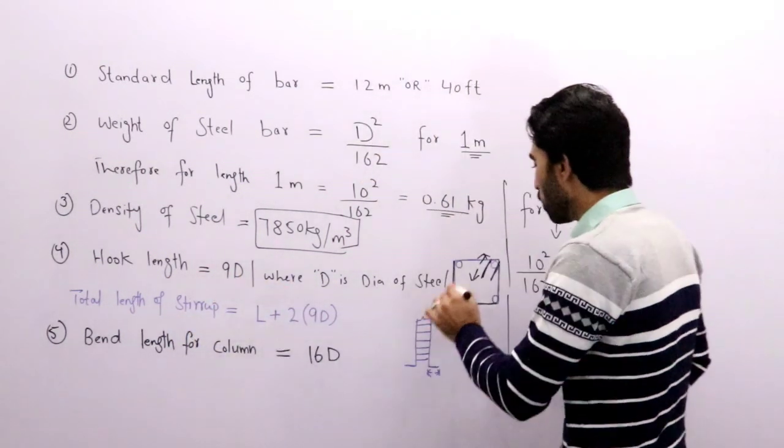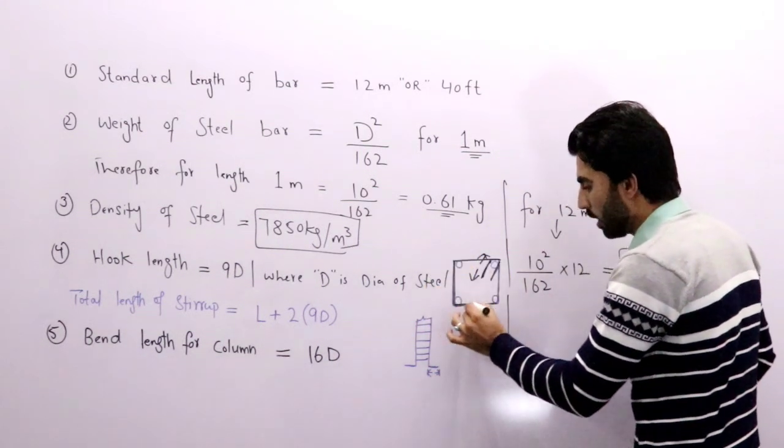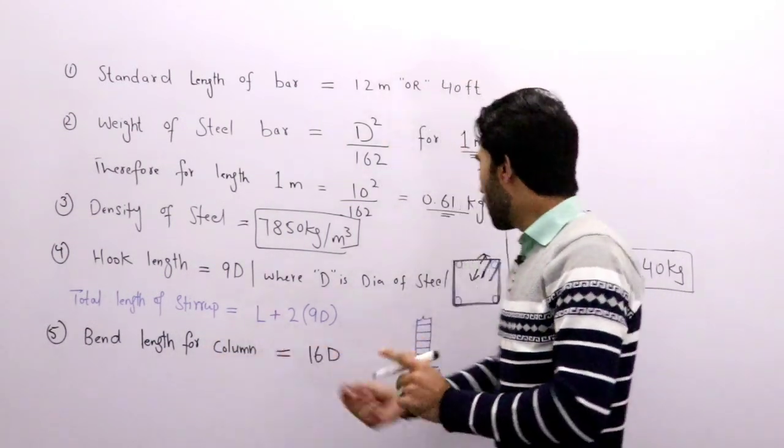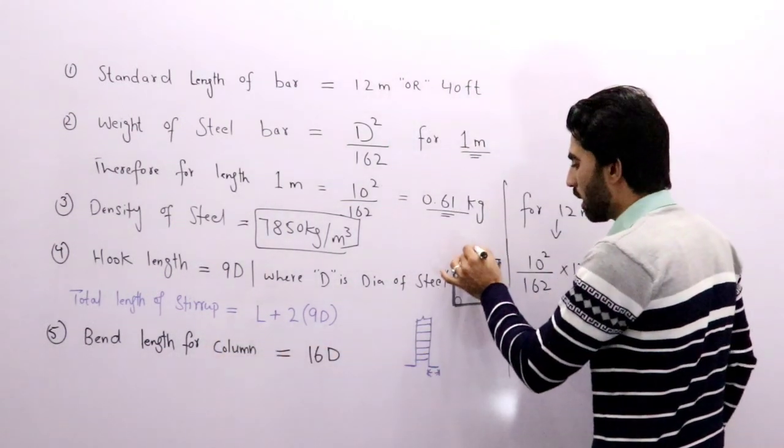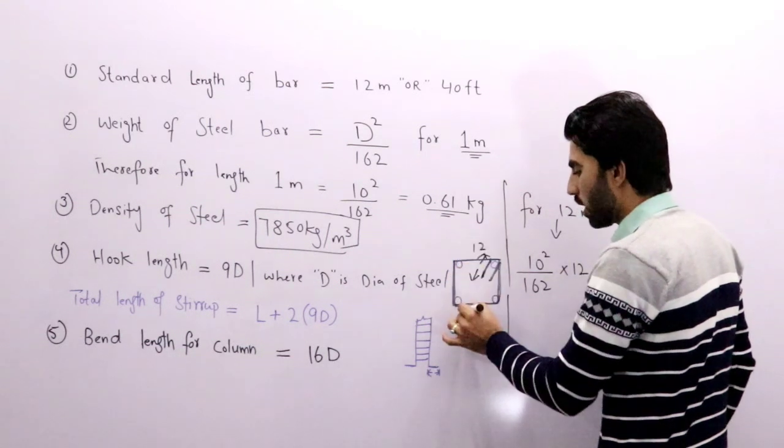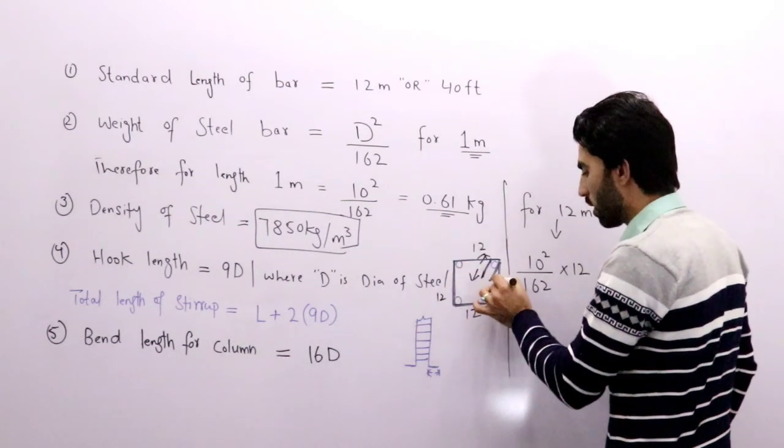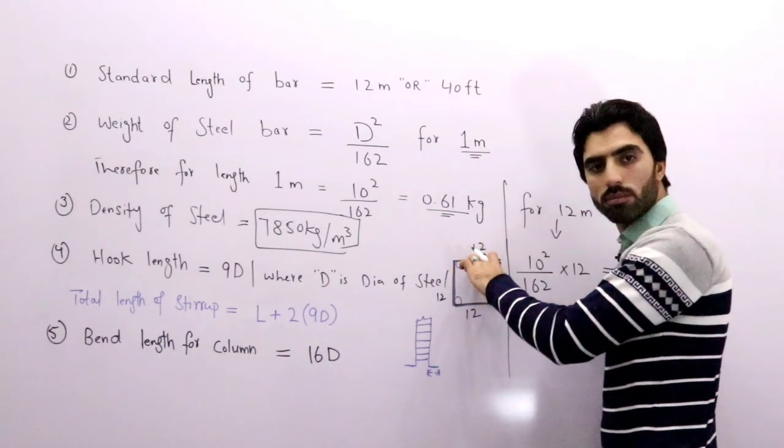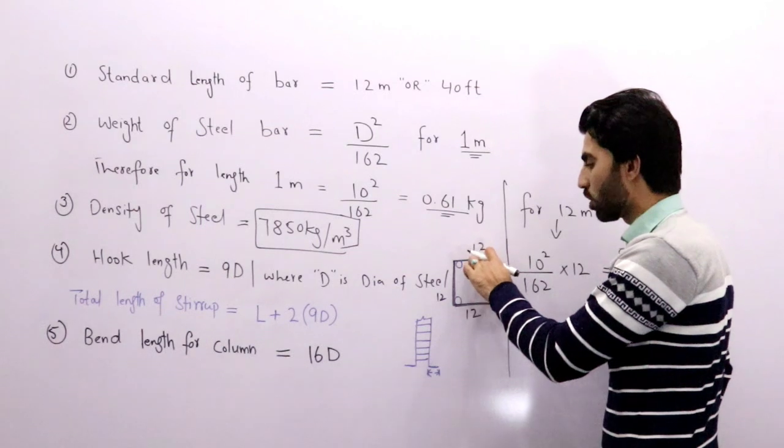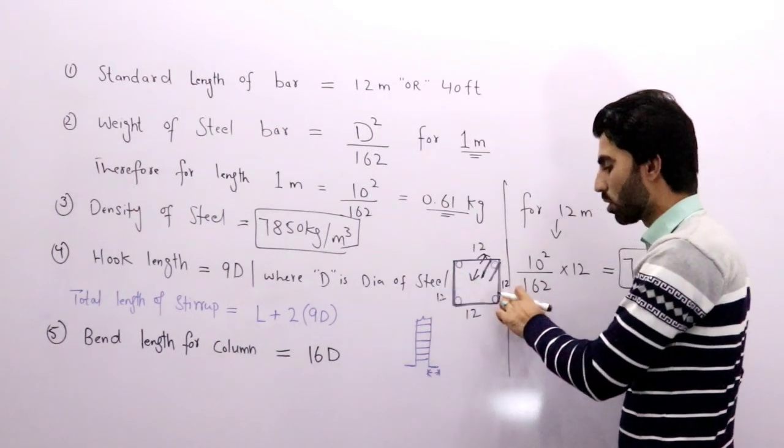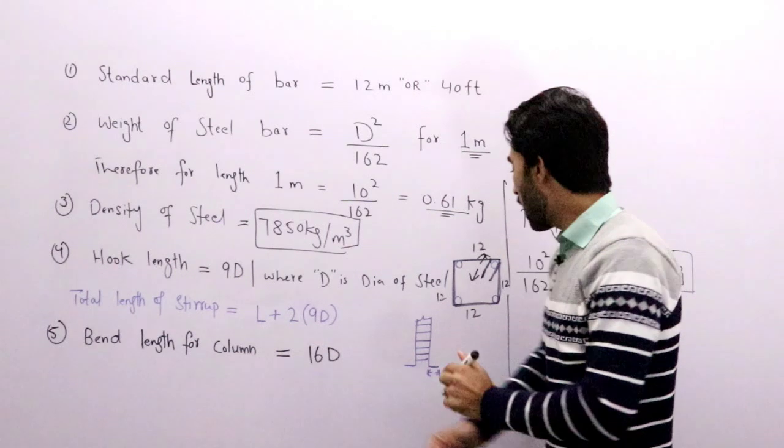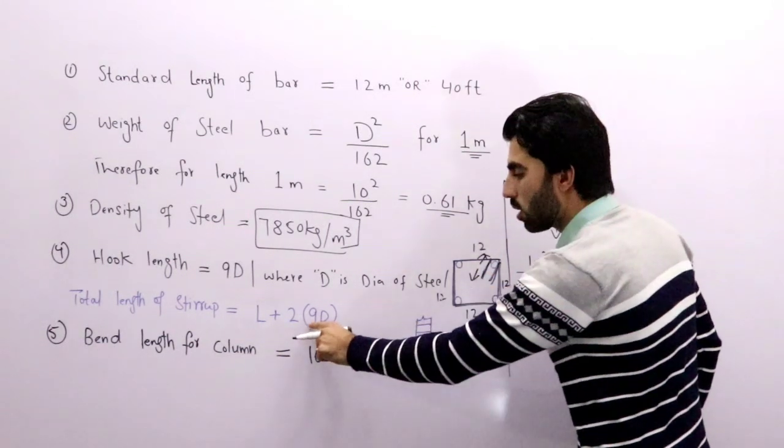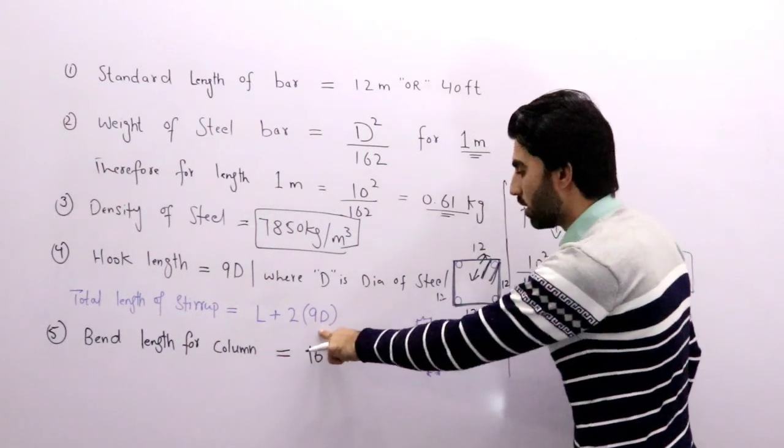L means, for example, this is 12 inches and this is also 12 inches and this is 12, this is 12. We will add these with each other: one, two, three, four, right? So L. Now we need here hooks. The hooks formula is 9D, which I have already discussed. It will give us total length of stirrup.